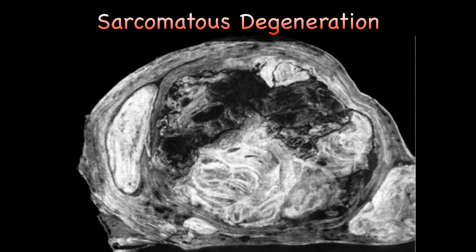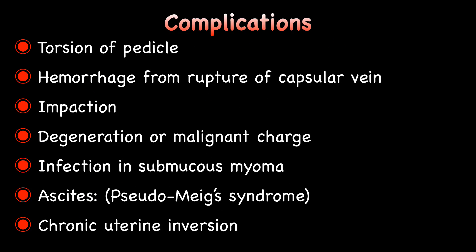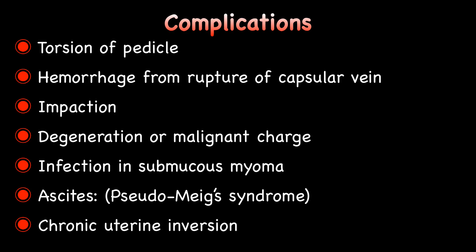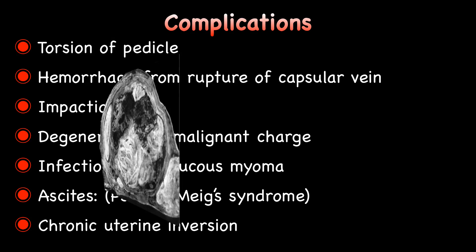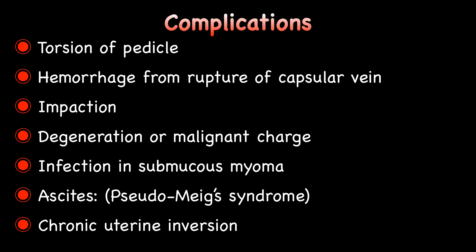Sarcomatous degeneration is a very rare occurrence, seen in 1 in 1000 to 8 in 1000 uterine fibroids. About two-thirds of uterine sarcomas arise in fibroids. Fibroids can undergo various complications like torsion of pedicle, hemorrhage from rupture of capsular vein, impaction, degenerative or myxomatous change, and infection in a submucous myoma. A mobile pedunculated sub-serous fibroid mechanically irritates the peritoneum leading to ascites — this is known as Pseudo-Meigs syndrome. A submucous pedunculated fibroid can pull on the fundus and give rise to chronic uterine inversion.